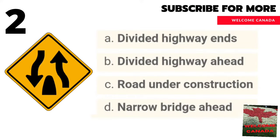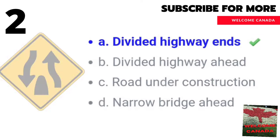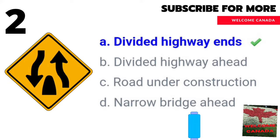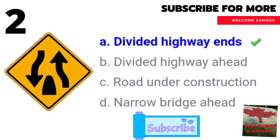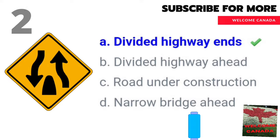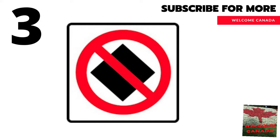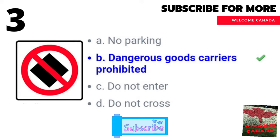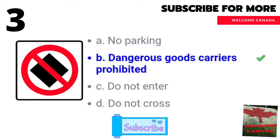Moving forward to the third traffic sign — choose the right answer. The correct answer is B: dangerous goods carriers prohibited. Now the fourth sign — look at the screen and choose your answer. The right answer is D: pavement ends, continuation has a gravel surface.